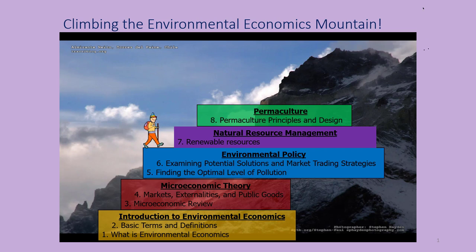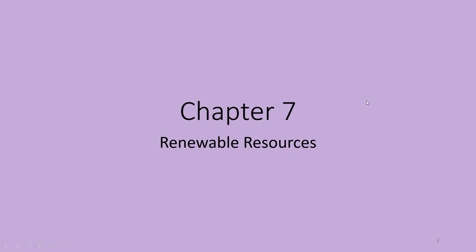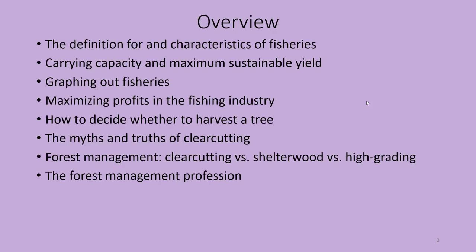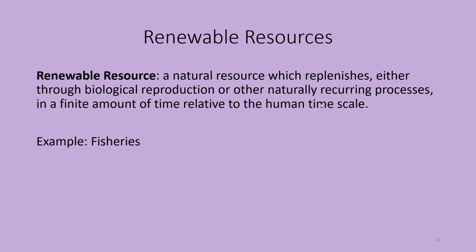In this chapter, we're focusing on natural resource management. Here's the overview: we'll first talk about the definition and characteristics of fisheries, then carrying capacity, maximum sustainable yield, and we'll graph out fisheries — the biggest part of this lecture. We'll also cover how firm behavior operates within the fishing industry to maximize profits. In our next lecture video, we'll discuss whether to harvest a tree, the myths and truths of clear cutting, shelter wood cutting, high grading, and proper forest management.